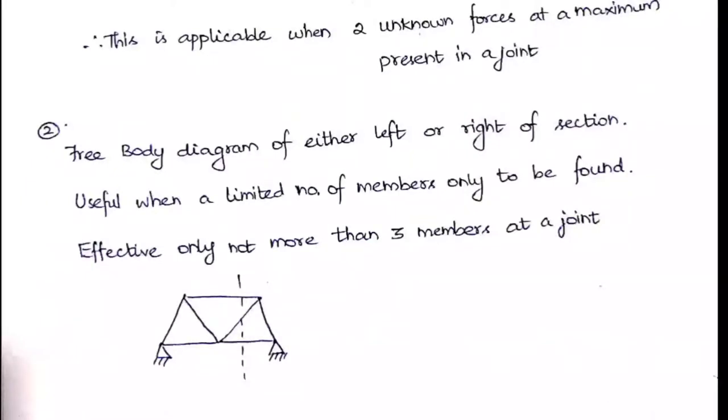For the method of joints, we have to start from the beginning or end. But for the method of sections, where you want that member, along that member you can cut a section and you can calculate the forces and the behavior of the axial members in the left or right of that section alone.